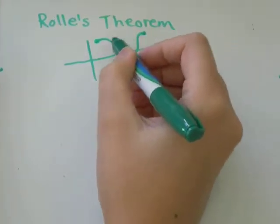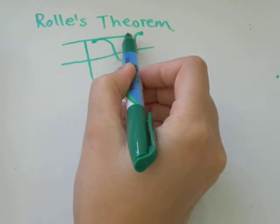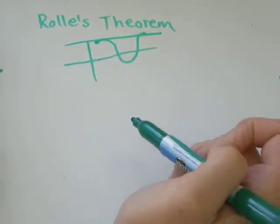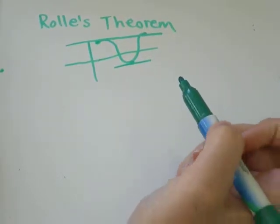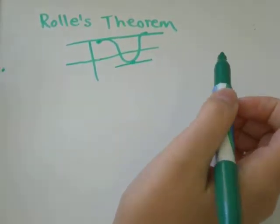where the slope at that c has the same slope as the two endpoints, well, that's going to be a slope of zero, where it's just a horizontal line.